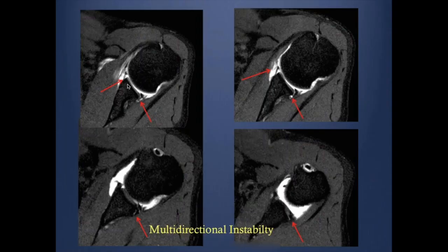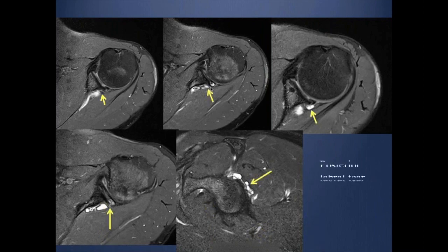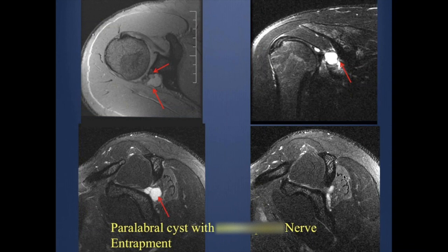A labral tear can present with an associated paralabral cyst. If a cystic area is seen adjacent to the labrum, this indicates a labral tear with paralabral cyst. When a cyst is identified, careful evaluation for nerve impingement is required. In one example, a paralabral cyst in the spinoglenoid fossa is associated with abnormal signal within the infraspinatus muscle compared to the supraspinatus, consistent with denervation edema from suprascapular nerve entrapment.